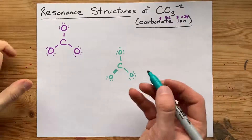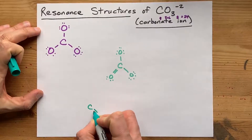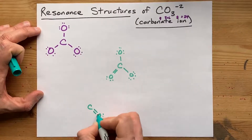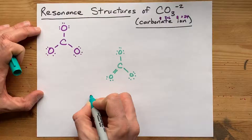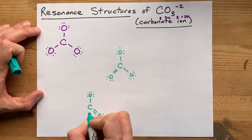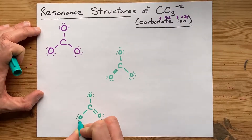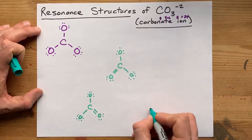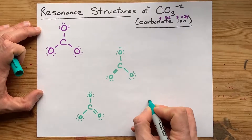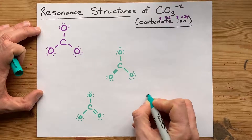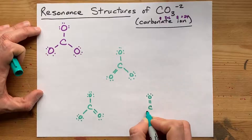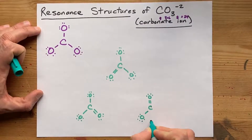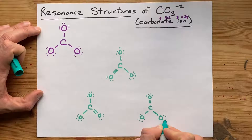But we could have just as easily chosen to make a double bond with the oxygen on the bottom right instead — that one's still single bonded, that one's still single bonded. Or we could have just as easily chosen to make a double bond with the oxygen on top, single bonded here, single bonded here.